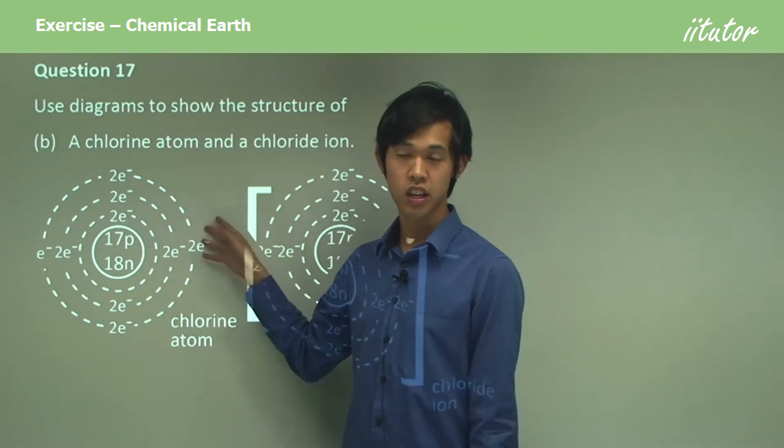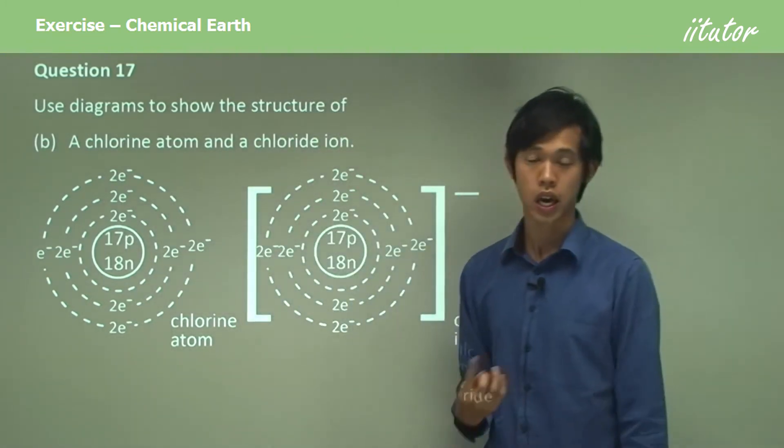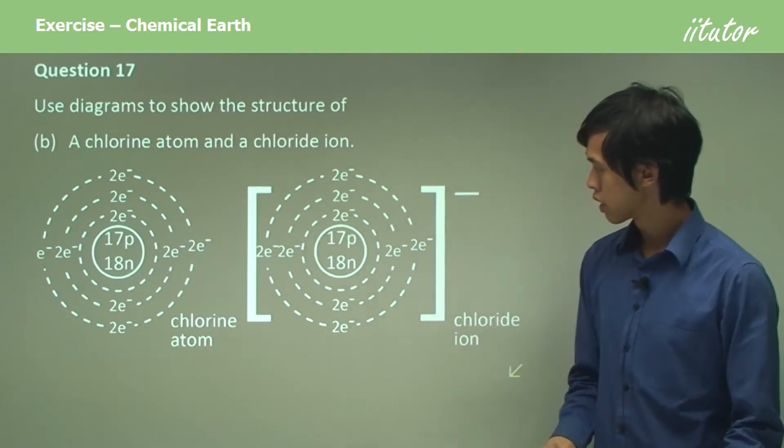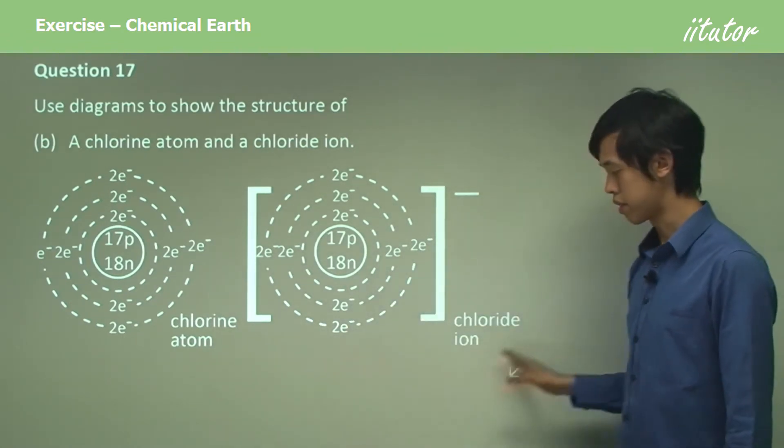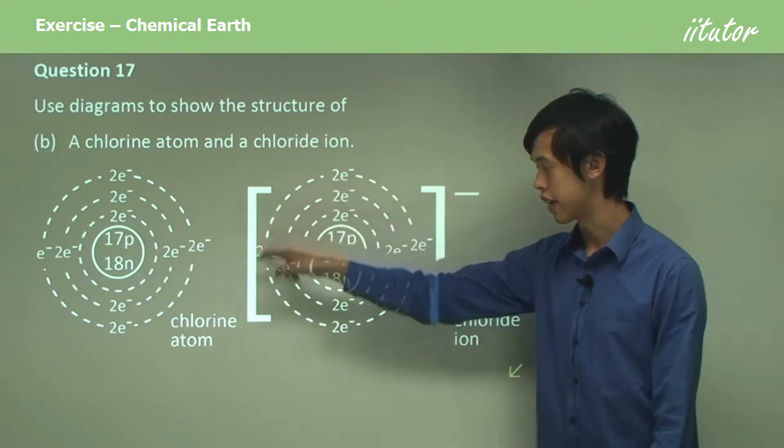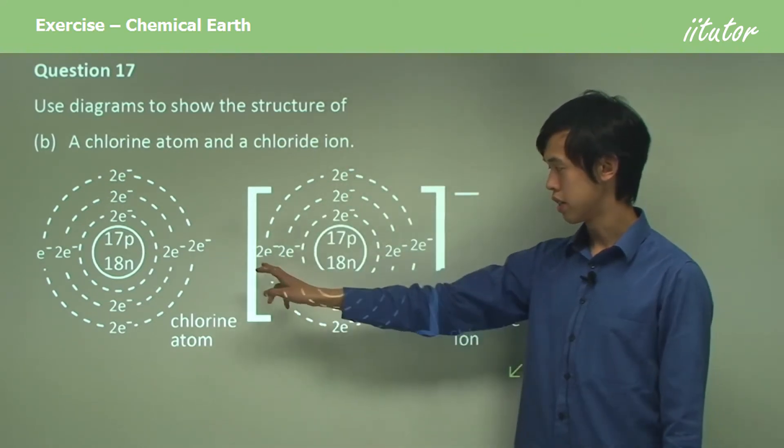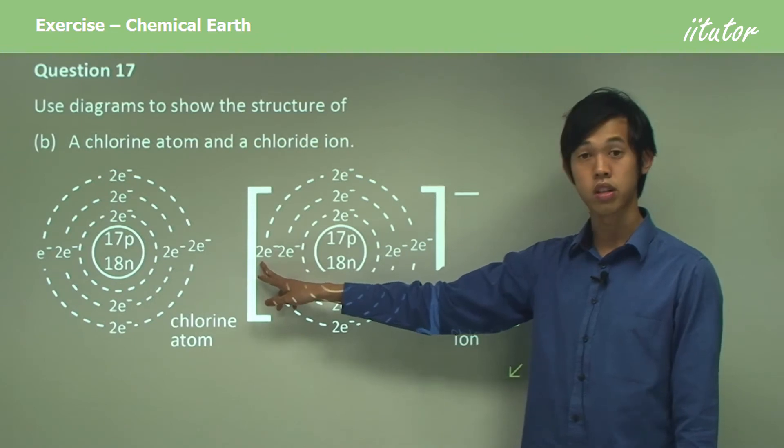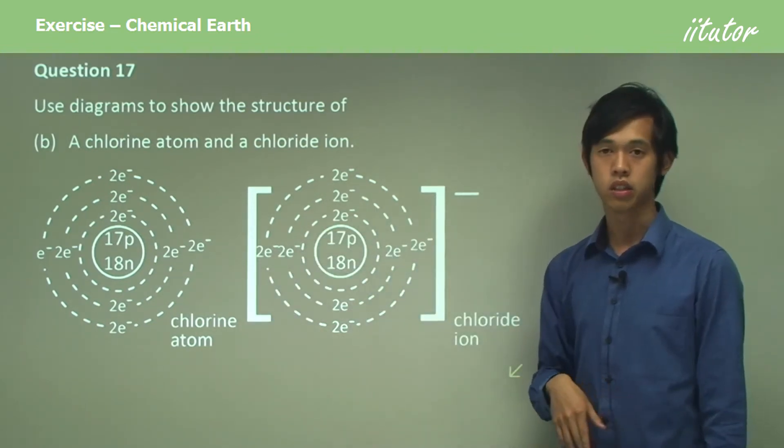So it's got seven in the outermost shell, which means that it needs one more to make eight to be stable. So when it does that, it becomes the chloride ion. And as you can see now, the only thing that's changed is the outer shell, which is it's got two electrons here rather than one. So it's got eight in its outer shell.